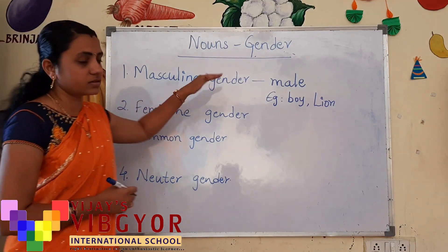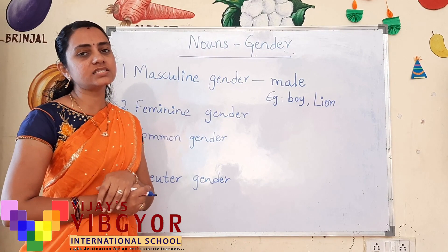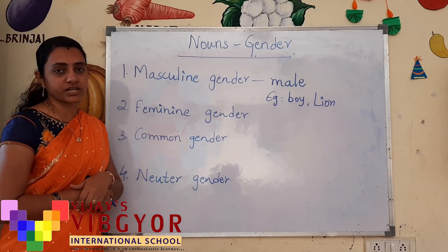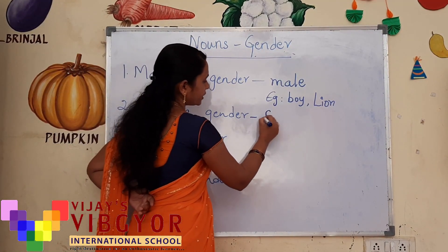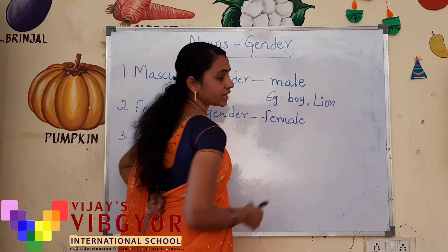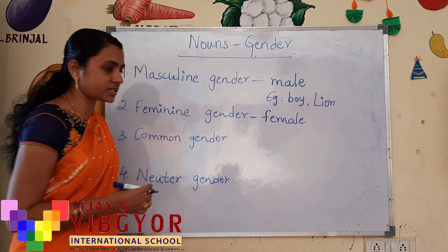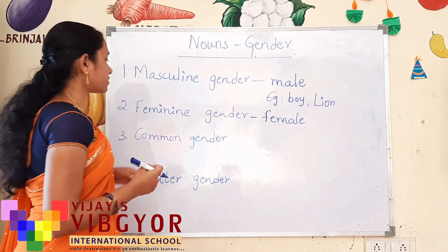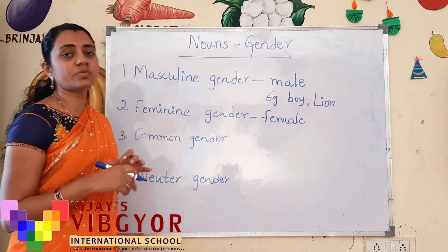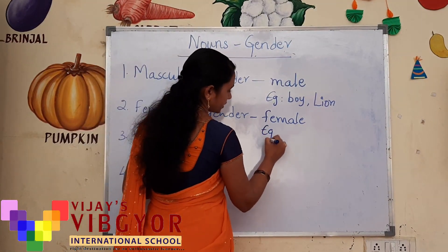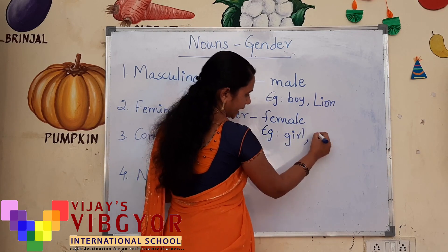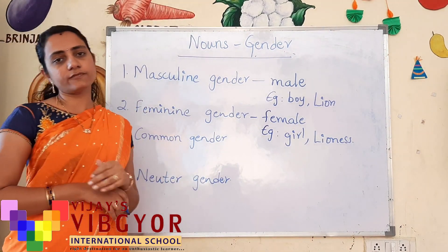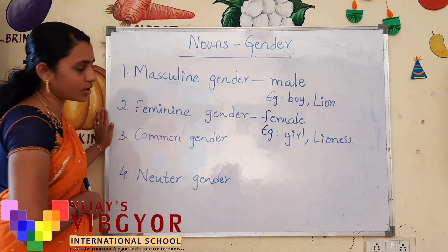Examples of masculine gender include: boy, lion, hero — all these represent males, so they are masculine genders. Next, feminine gender — those nouns which represent females are included in feminine gender. Female organisms, female animals — if they represent female, they are said to be included in feminine gender. For example: girl, lioness. If hero is masculine gender, then heroine falls under feminine gender.